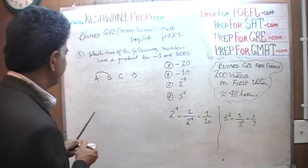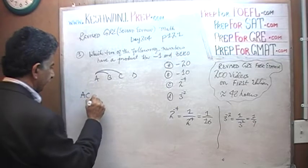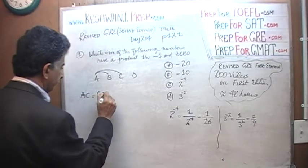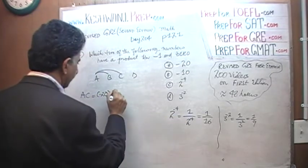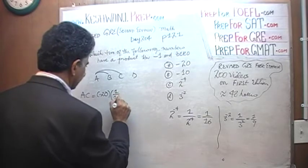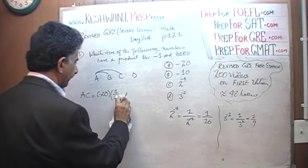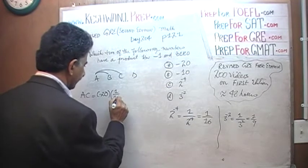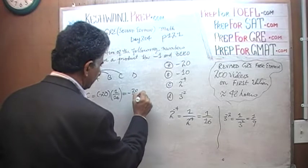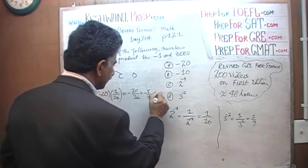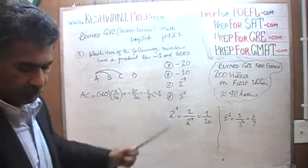Let's try A times C. A times C: A is negative 20 and C is 1 over 16, which gives us negative 20 over 16, which is the same as negative 5 over 4, which is less than negative 1. We need to fall between negative 1 and 0, so it is not that either.